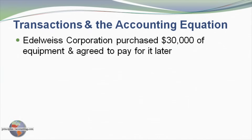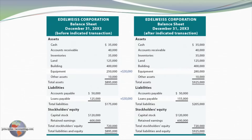Moving on to another example: Adelweiss Corporation purchases $30,000 of equipment and agrees to pay for it later. Looking at the complete balance sheet, notice that equipment, which was $250,000, is now $280,000 — an increase of $30,000. And loans payable that were $125,000 are now $155,000, an increase of $30,000. Most importantly, total assets are now $925,000, and total liabilities plus total equity equal $925,000. The equality was maintained.